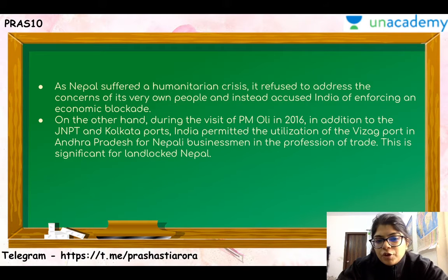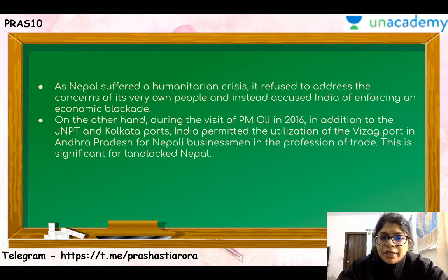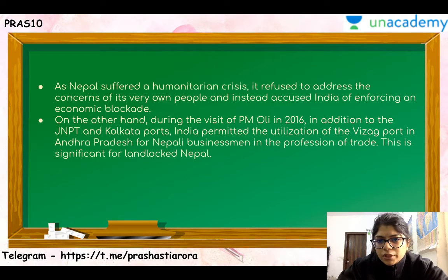As Nepal suffered a humanitarian crisis, it refused to address the concerns of its own people and instead accused India of enforcing an economic blockade. On the other hand, during Prime Minister KP Sharma Oli's visit in 2016, India allowed the utilization of the Vizag port in Andhra Pradesh for Nepali businessmen. This is a very significant deal for Nepal because it is a landlocked nation, and utilization of any port in India can only enhance Nepal's economy.